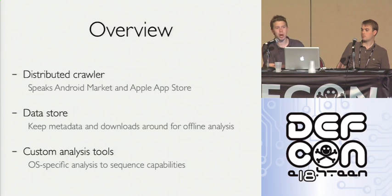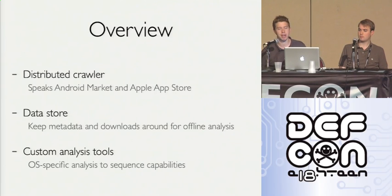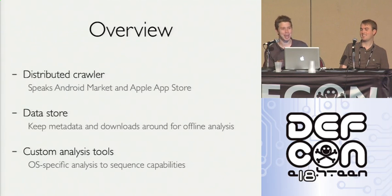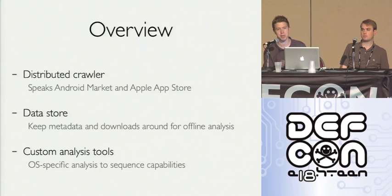How did we build it? A quick architectural overview. We built a distributed crawler that speaks Android and iPhone. It communicates with each app store over its native protocol and interacts with it the same way you would download something on your device. We tried running this in a single thread originally, but downloading every mobile app in the world in a single thread takes a really long time — so we distributed it. We're also storing everything we download so we can look at trends over time and do offline analysis.